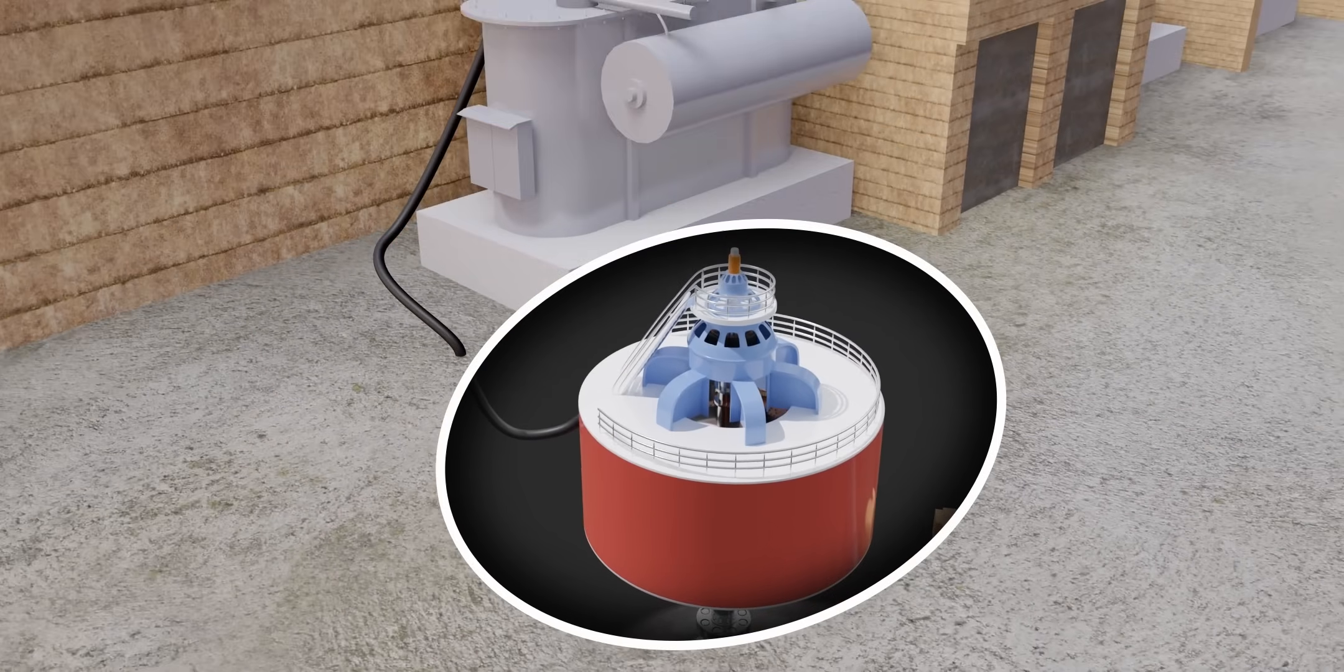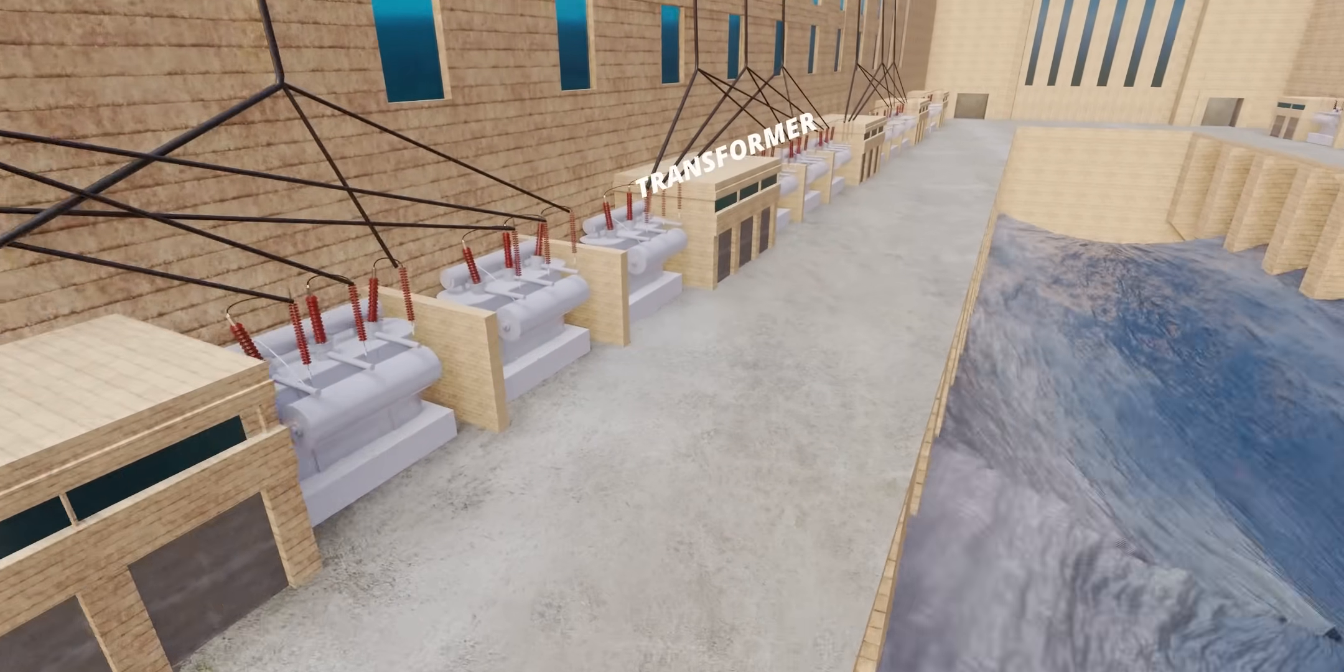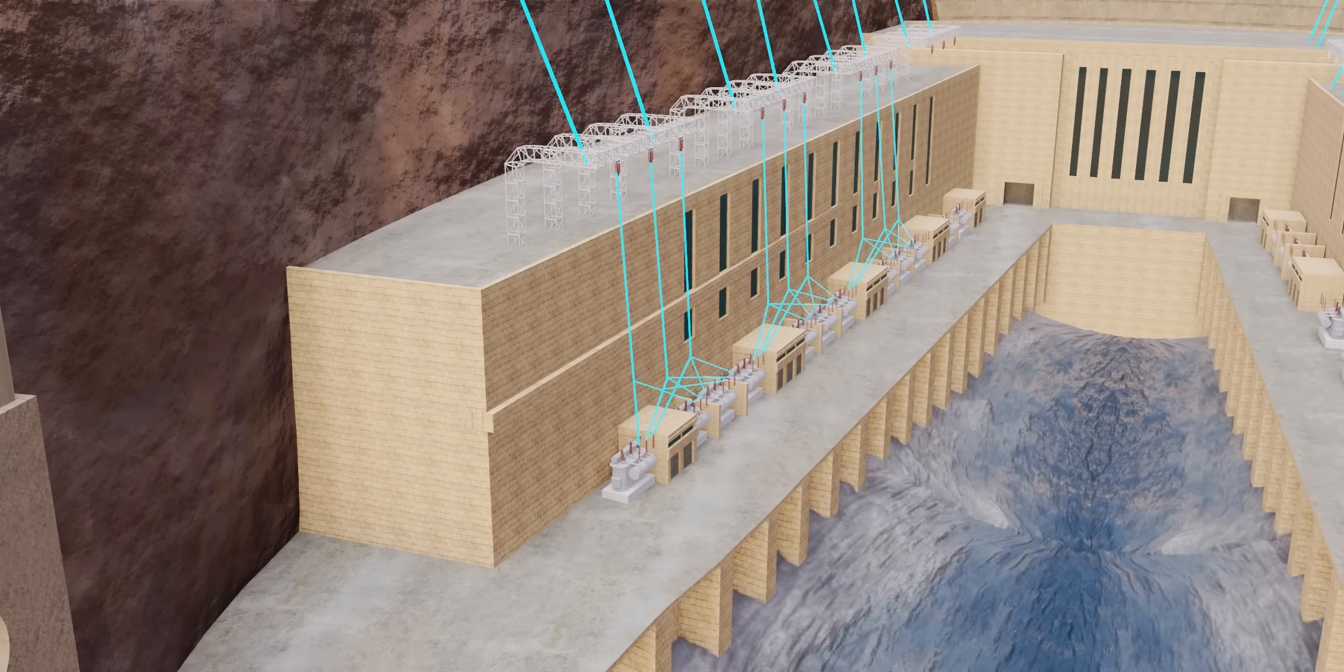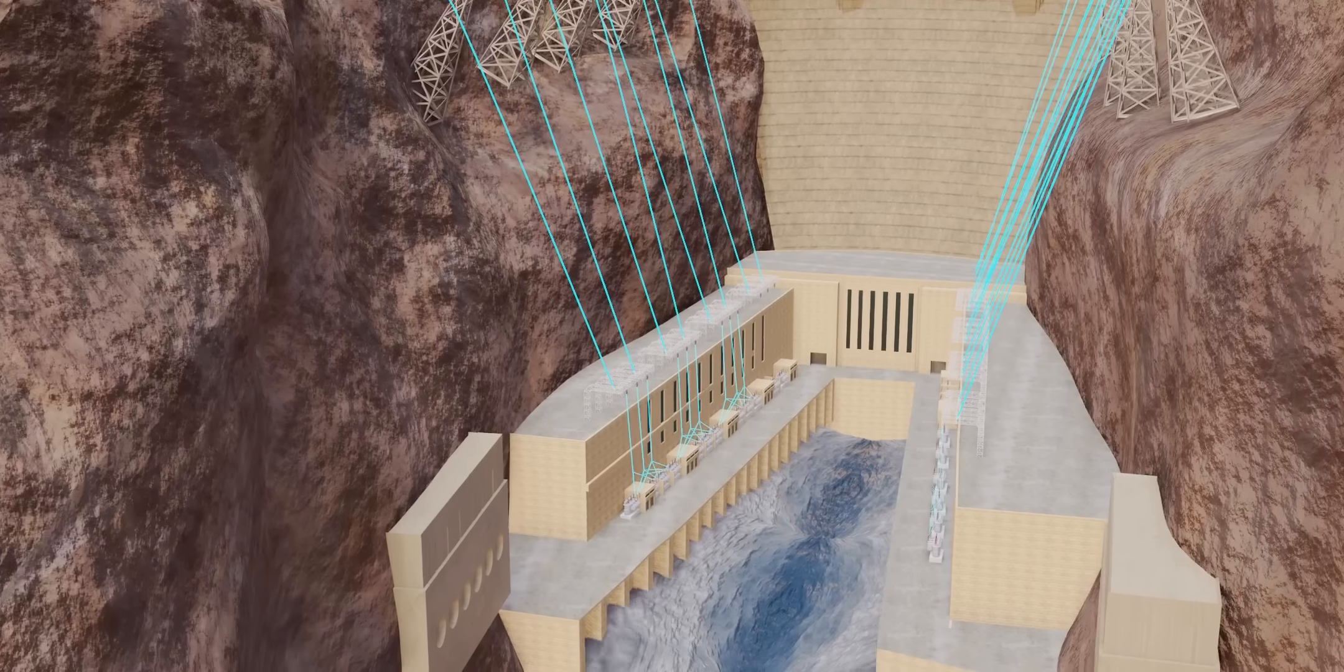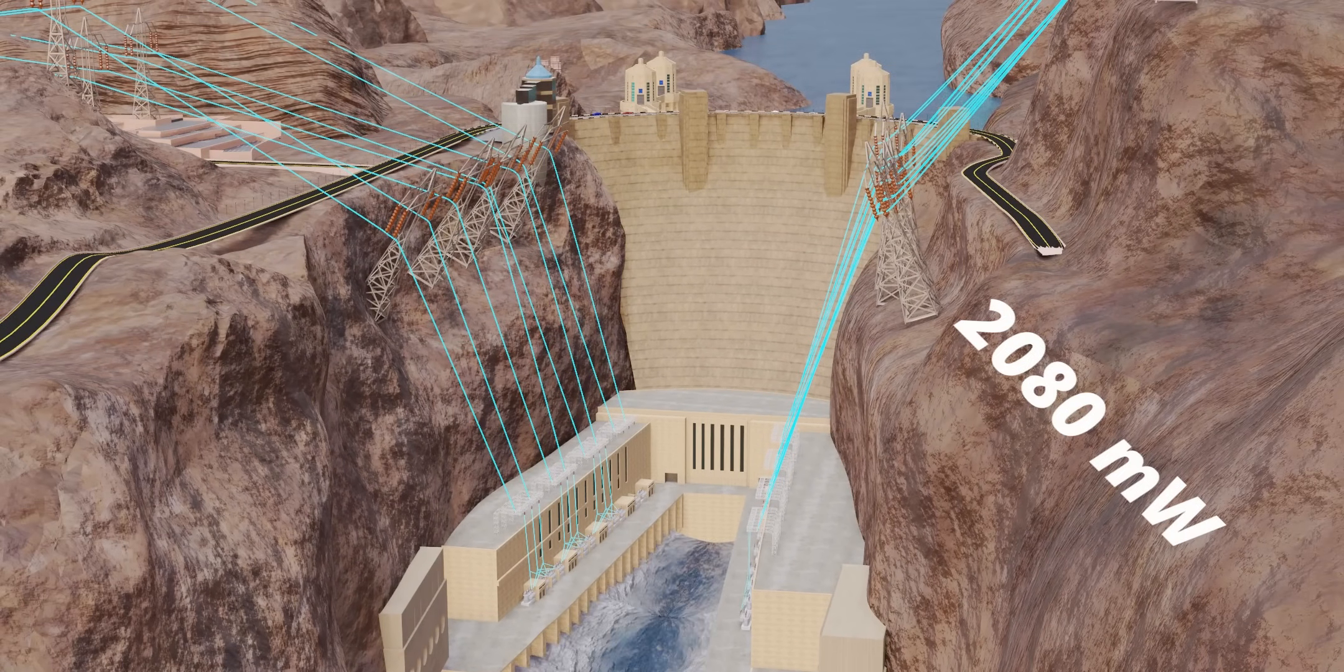The AC power generated in the stator is then converted to a higher voltage using transformers for efficient, long-distance transmission. The high-voltage electricity is transmitted through power lines to the grid where it supplies homes, businesses, and industries.